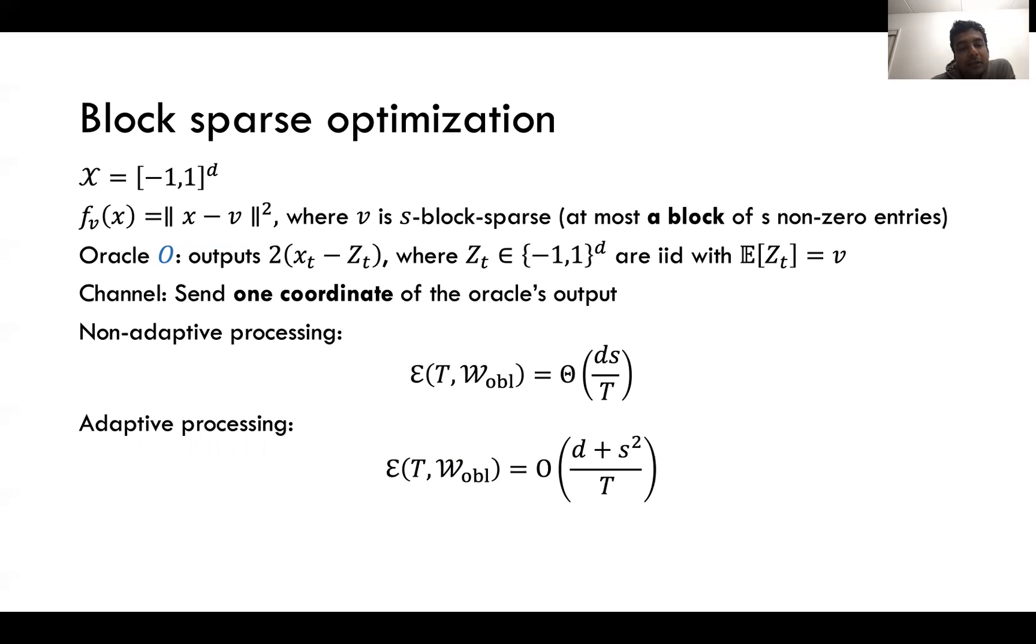The oracle we consider outputs 2(x_t - z_t) where z_t's are iid with expected value v. It's easy to see that this is an unbiased estimate with bounded norm. The channels we consider are coordinate descent channels. In other words you can only send information about one coordinate of this oracle output. When you have non-adaptive processing, the method by which you are going to select which coordinate you are going to send back is fixed ahead of time. You don't choose it adaptively, you are not going to adaptively choose in each round which coordinate you are going to send back. But when you allow for adaptive processing then in each round you can select which coordinate to send back.